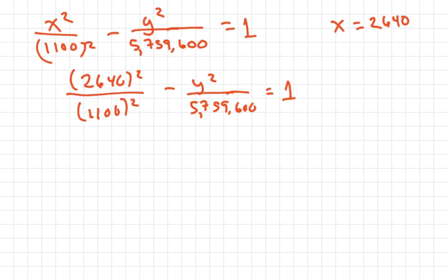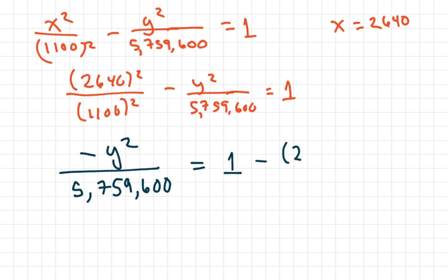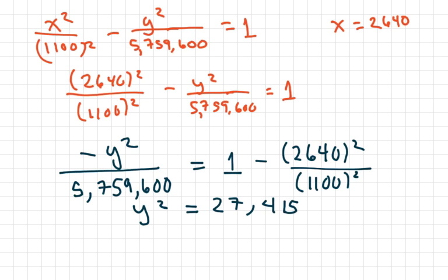And then we just solve for Y. So you can solve for Y any way you want. I'm going to move this portion over. So I'm going to write negative Y squared over 5,759,600 equals 1 minus 2640 squared over 1100 squared. And then basically, you can solve and crisscross and whatever. Use your calculator.